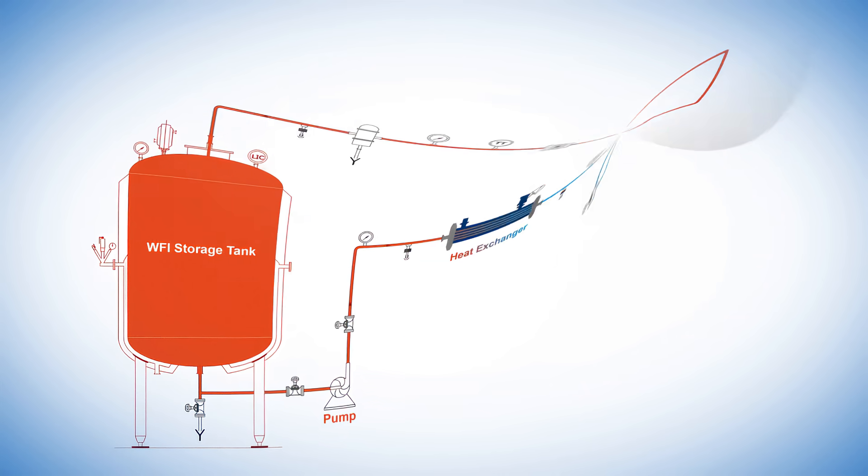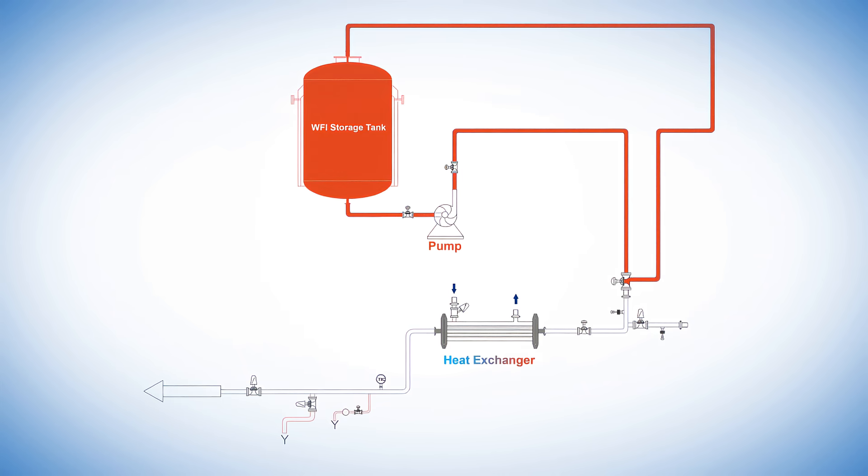Another method uses a valve and heat exchanger mounted on a T in the WFI loop. When the valve is opened, the water is cooled through the heat exchanger at the point of use. Using this method, the heat exchanger needs to be sanitized prior to each use.